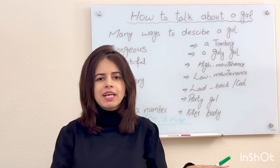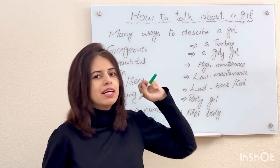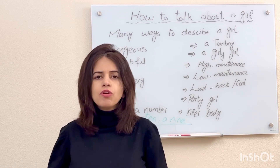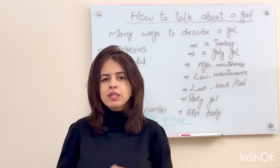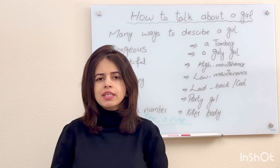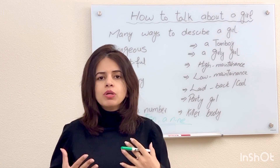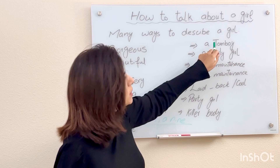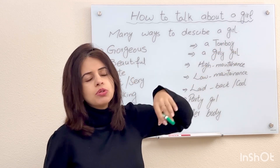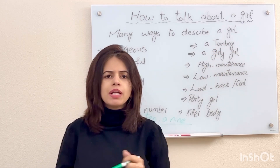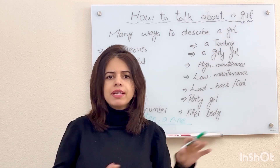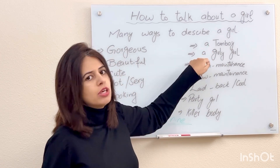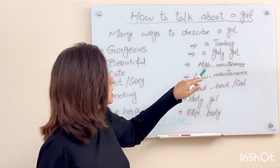A tomboy type of girl is less common. A girly girl loves pink and red — the typical girls' favorite colors. They enjoy makeup and traditionally feminine hobbies. A tomboy, on the other hand, wears t-shirts and jeans, rides horses, and doesn't feel so good about makeup. So girly girl and tomboy are opposites.